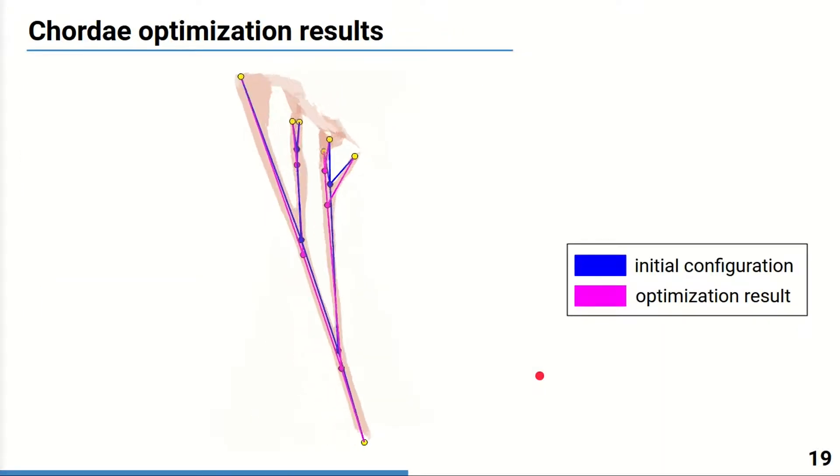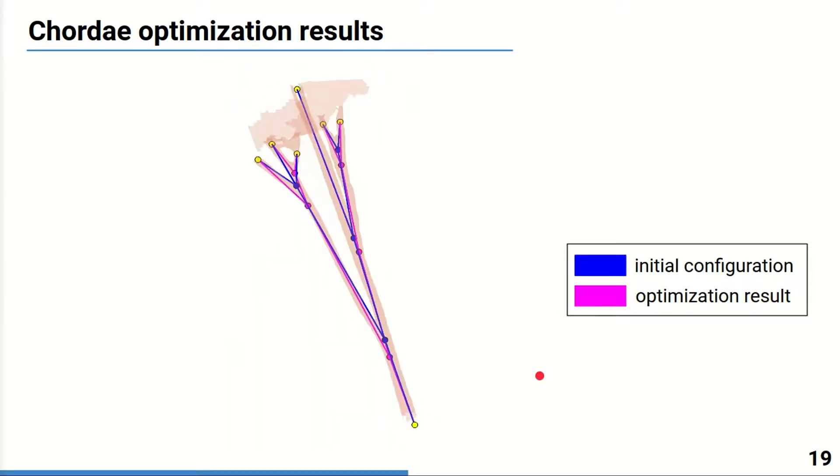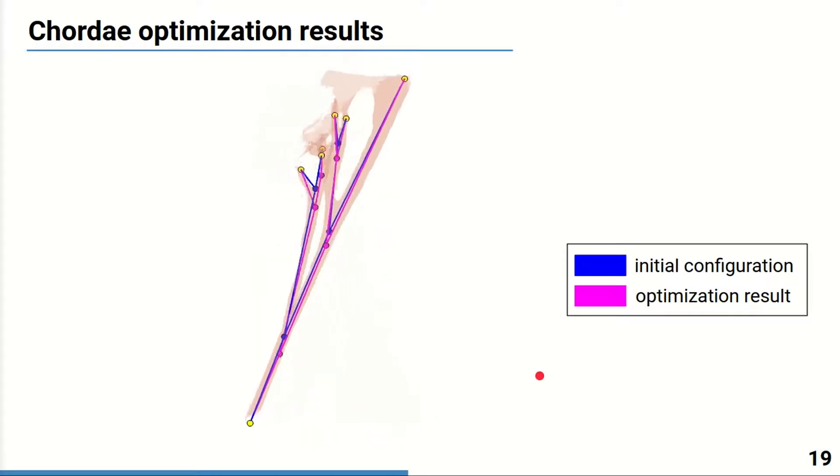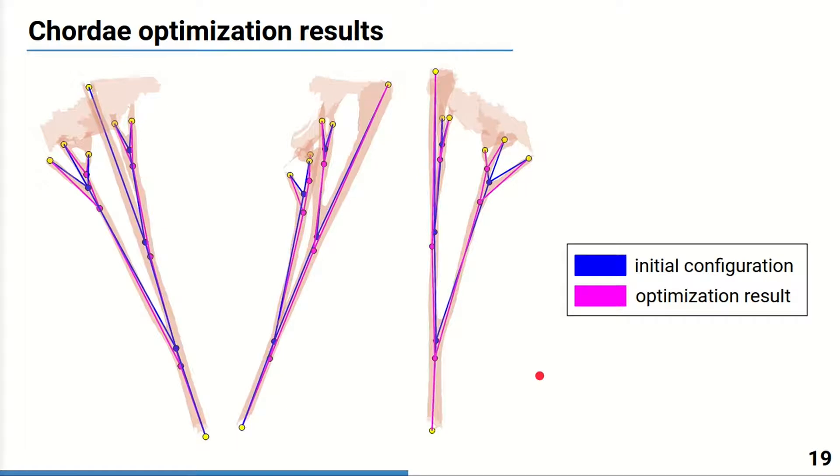Here you can see an example of an optimized tree. After the optimization, the chordae segments are more centered in the image and are more straightened. For the trees with faulty topology cases, as this one, additionally, topology optimization is performed.